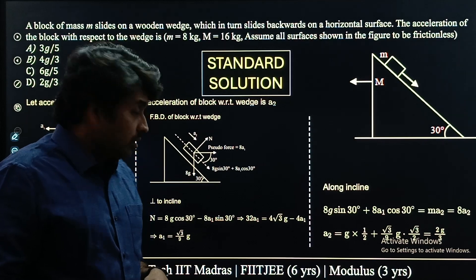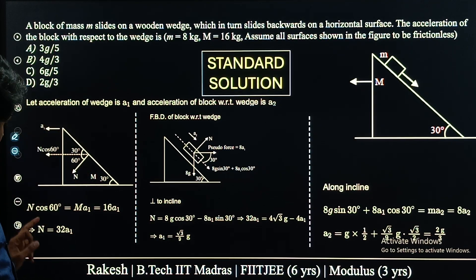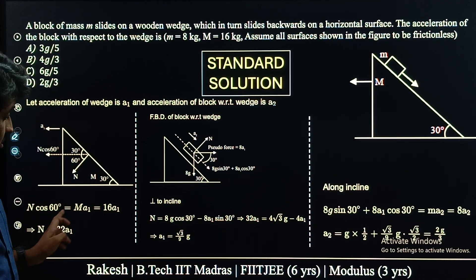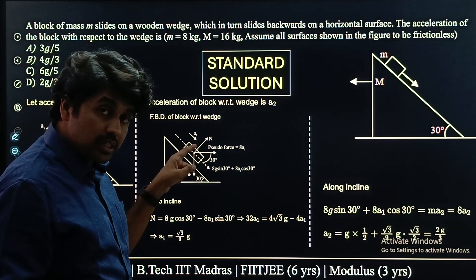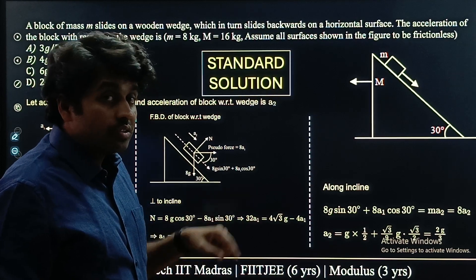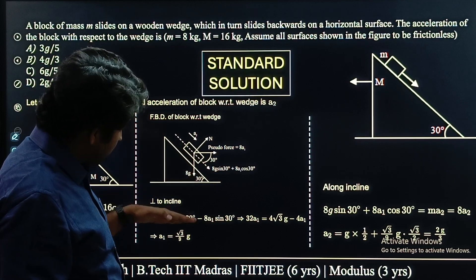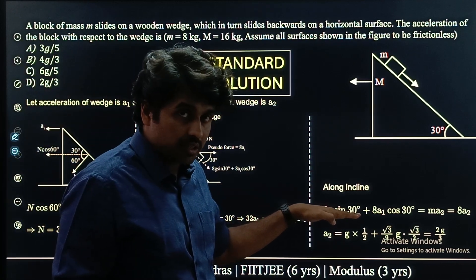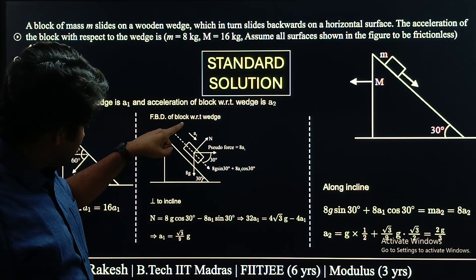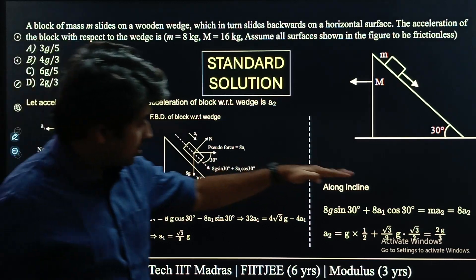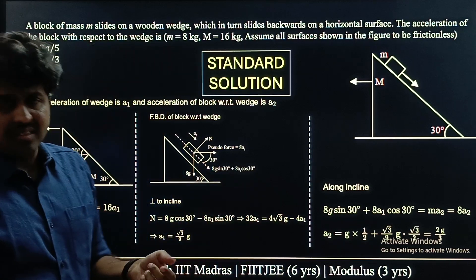In the standard method, we first draw the free body diagram of the wedge, mark the normal reaction and acceleration, and write N cos 60° equal to mass times acceleration. Next, we draw the FBD of the block with respect to the wedge. Since the wedge is a non-inertial frame, we apply a pseudo force on the block. We write equations in both directions and along the incline. We get three variables — A1, A2, and normal reaction — giving three equations to solve. The answer comes out as 2G/√3.